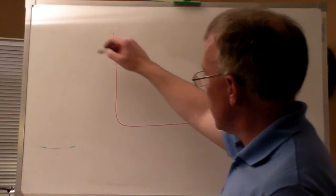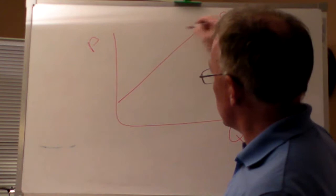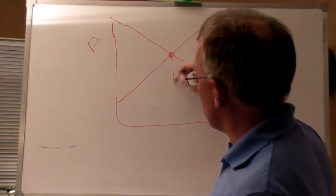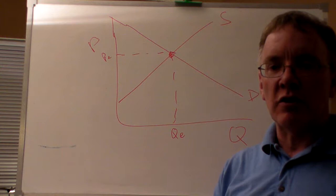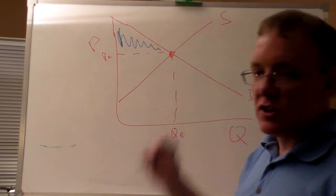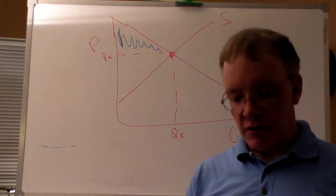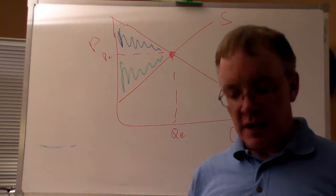As you recall, we would have our graph with the quantity on the x-axis and the price on the y-axis. The supply curve would slope up, the demand curve would slope down, and then we would reach an equilibrium price and quantity where supply and demand met. We defined the area under the demand curve, above the price, as the consumer surplus — shaded in blue — which is the difference between the willingness to pay and the price that consumers actually have to pay. And producer surplus is the area above the supply curve, below the price, shaded in green, which is the difference between the cost to the producer and the price they get for the good.